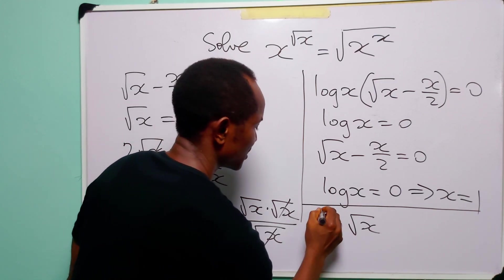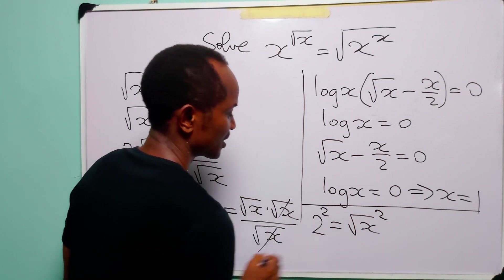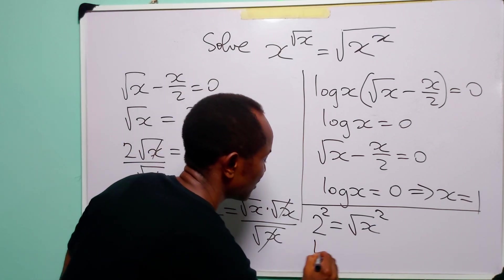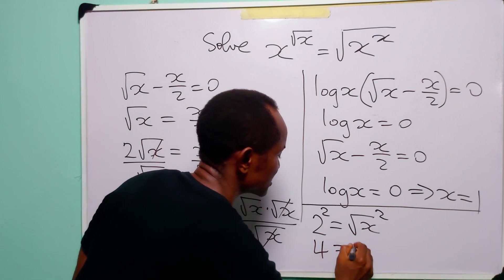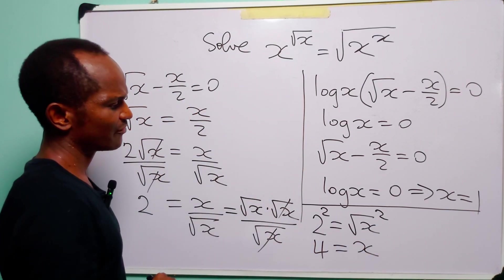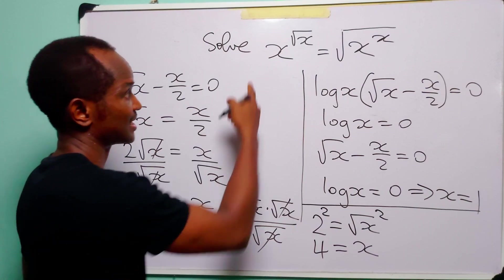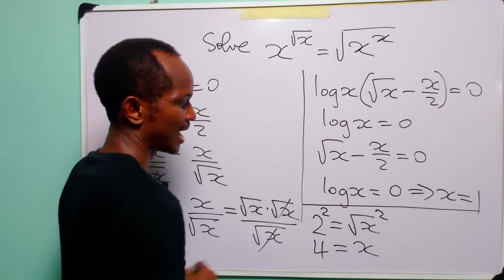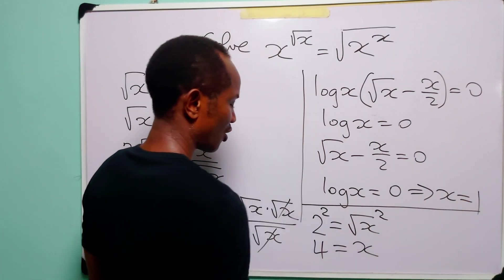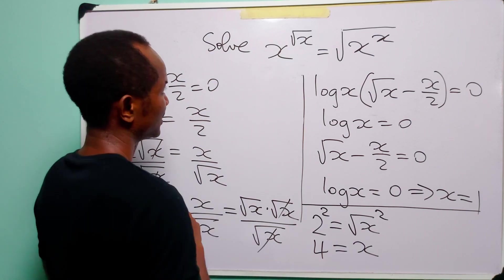Next we square both sides of this equation. When we do that we have 4 is equal to x. So the two values of x that satisfy this equation are x equal to 1 or x equal to 4.